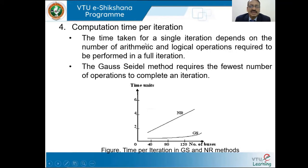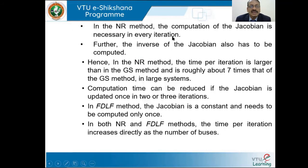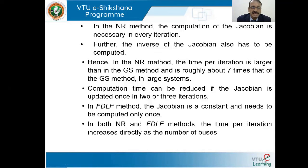Computational time per iteration: the time taken for a single iteration depends on the number of arithmetic and logical operations required in a full iteration. The Gauss-Seidel method requires the fewest number of operations to complete an iteration. In the NR method, the computation of the Jacobian is necessary for every iteration, and the inverse of the Jacobian also has to be computed. Hence, in the NR method, the time per iteration is larger than the Gauss-Seidel method and is roughly about seven times that of Gauss-Seidel in large systems. Computation time can be reduced if the Jacobian is updated once in two or three iterations. In the FDLF method, the Jacobian is constant and needs to be computed only once. In both NR and FDLF methods, the time per iteration increases directly as the number of buses.